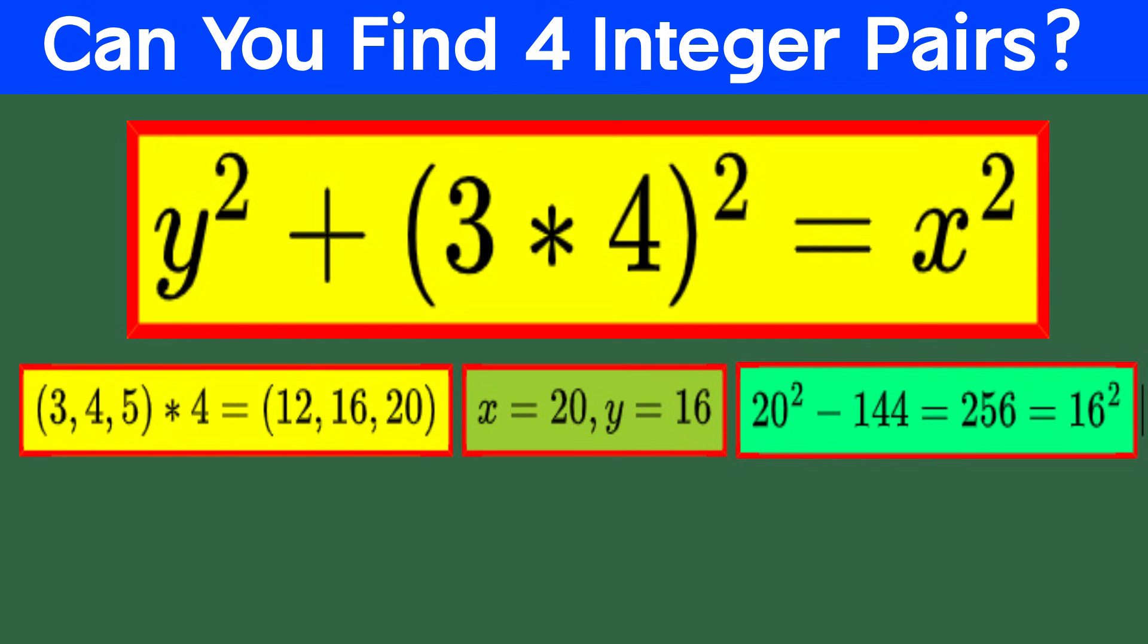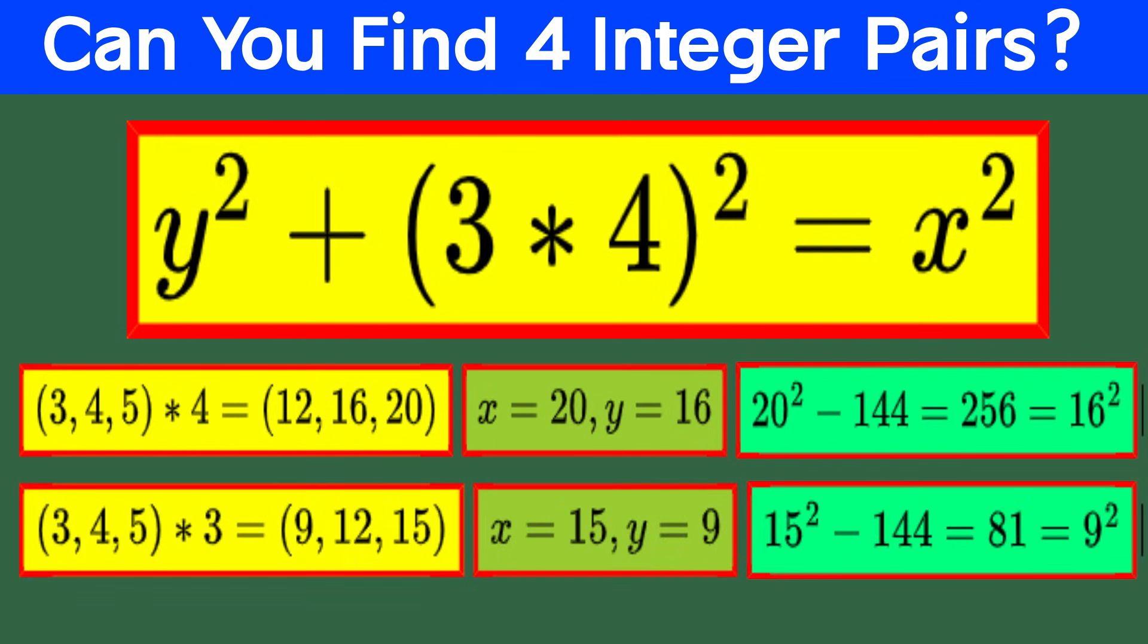Now, for the second choice, let's switch it up and make 4 are b and k are 3. That gives us the triple, 3 times 3, 3 times 4, and 3 times 5, or 9, 12, and 15. Let's check this one out, 15 squared minus 144 equals 81, which equals 9 squared. Boom. It works again. Two Pythagorean triples, both showing off their math magic. Pretty neat, huh?